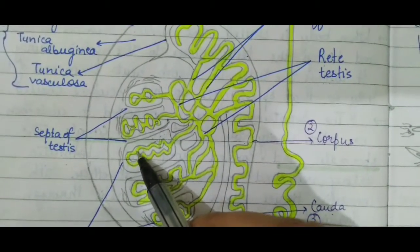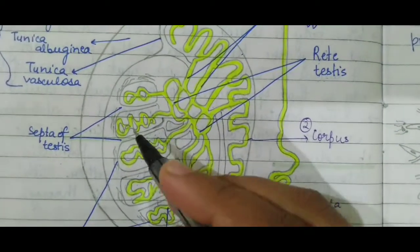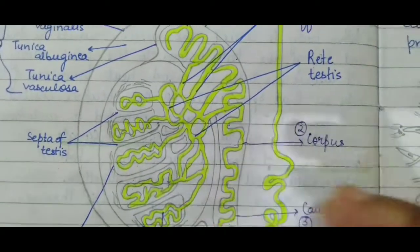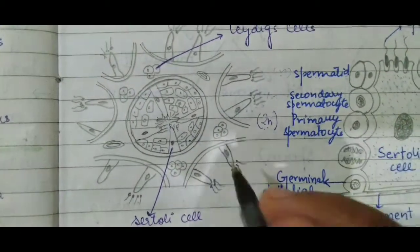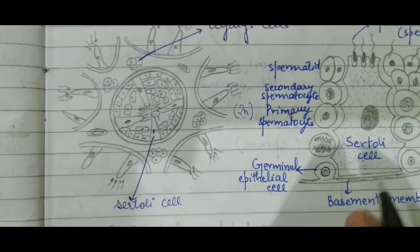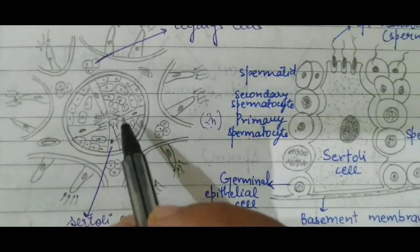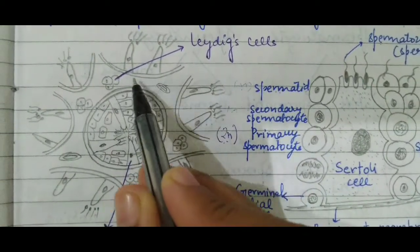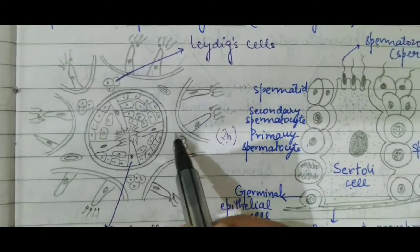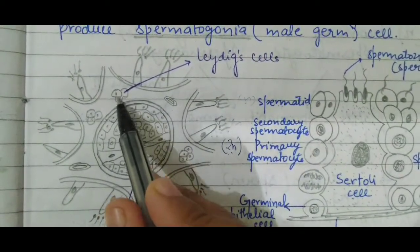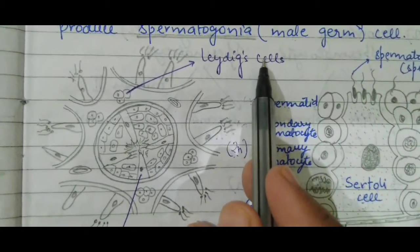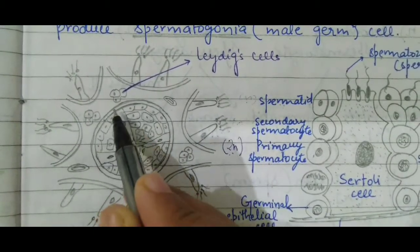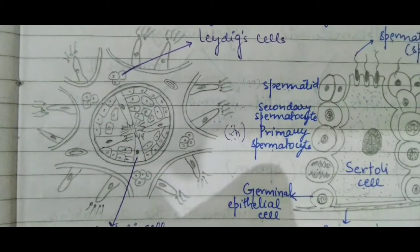Sertoli cells are present in the inner lining of the seminiferous tubules. If we take a transverse section of a testicular lobule, we can see in this diagram that this is the transverse section of the seminiferous tubules. In the in-between space of the seminiferous tubules, we can see a mass of cells called Leydig cells or interstitial cells, while the long cells within the germinal epithelium of seminiferous tubules are called Sertoli cells or sustentacular cells.